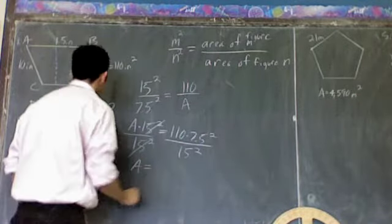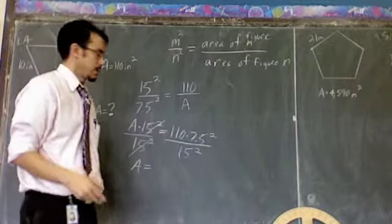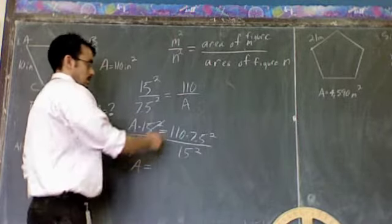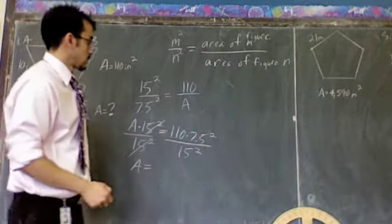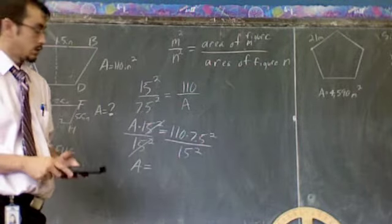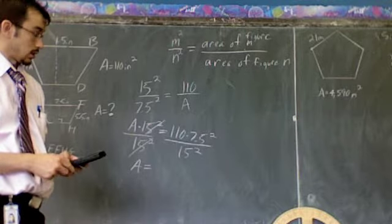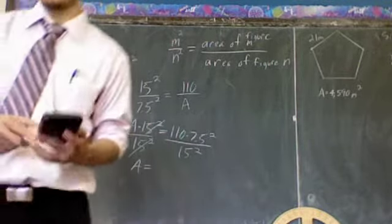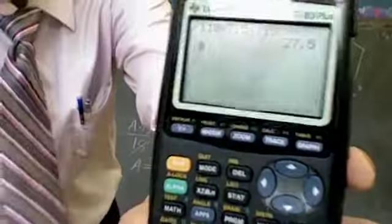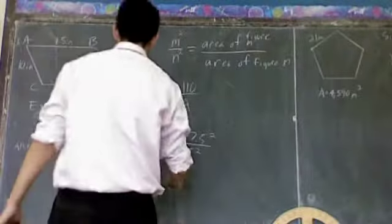So it's cancelled. And to solve for that, you actually do this operation. 110 times 7.5 squared divided by 15 squared. That's what you will get if you do that.